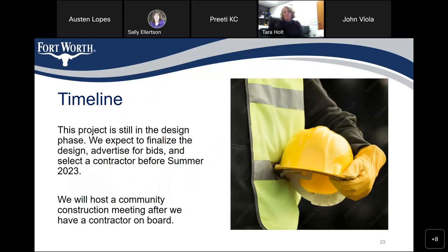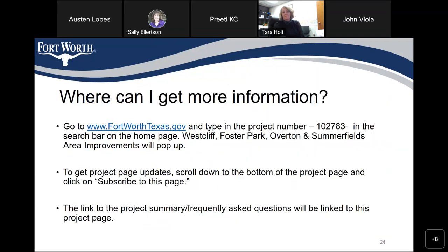Now we can talk about the timeline of the project. This project is still in the design phase. We expect to finalize the design, advertise for bids, and select a contractor before summer of 2023. We will host a community construction meeting after we have a contractor on board. Where can I get more information? You can go to www.fortworthtexas.gov and type in the project number 102783 in the search bar on the homepage. Westcliff, Foster Park, Overton, and Summerfields Area Improvements will pop up. Scroll down to the bottom of the project page and click on 'Subscribe to this page.' The link to the project summary or frequently asked questions will be linked to this project page.